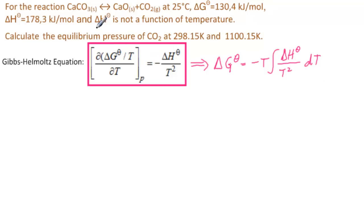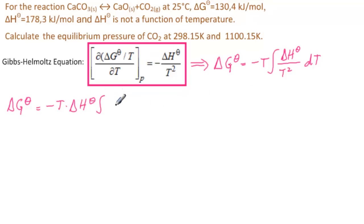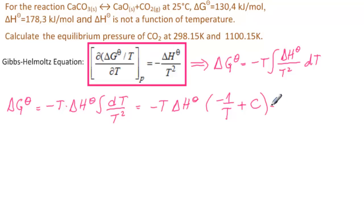Because ΔH° is independent of temperature, it is constant and can be pulled out of the integral. Integrating, we get ΔG° = ΔH°(1) + (−T·C), or equivalently ΔG° = ΔH° − T·C, where C is an arbitrary constant of integration. We will find C using the known values at 298.15 K, then use the formula to find ΔG° at 1100.15 K.